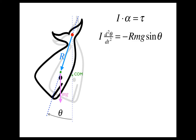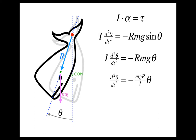Now remember from calculus that sine theta is approximately equal to theta for small angles. So we're going to assume the oscillation includes only relatively small angles and make that substitution. That allows us to manipulate the equation into something that looks like the condition for simple harmonic motion. We get d squared theta by dt squared equals negative mgr over I times theta, and that is the condition for simple harmonic motion.